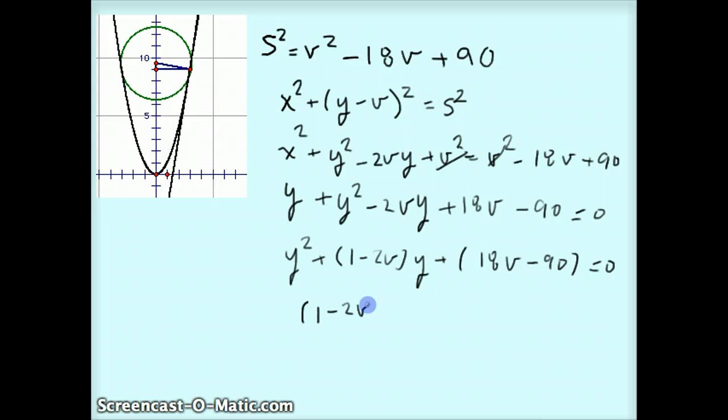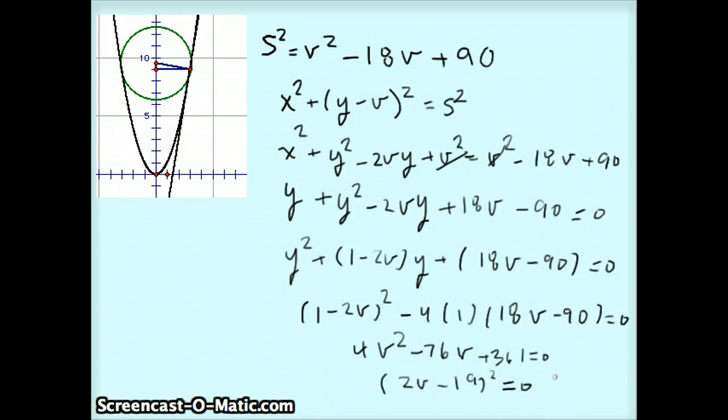So I say, when is 1 minus 2V, that's B squared, minus 4 times A times C. When does that equal 0? Well, that's going to become a quadratic equation, which, when you fully simplify it out, becomes 4V squared minus 76V. Sorry. 76V plus 361. You can work out the details there yourself. Equals 0. Well, that thing factors to 2V minus 19 squared equals 0. Which means that, move over here, that 2V minus 19 has to equal 0, or V has to equal 19 over 2.